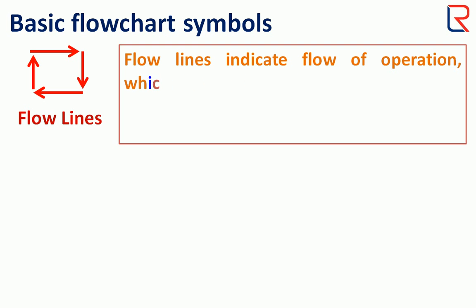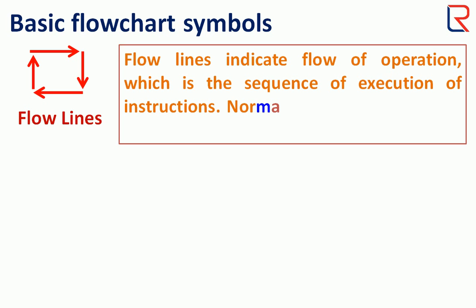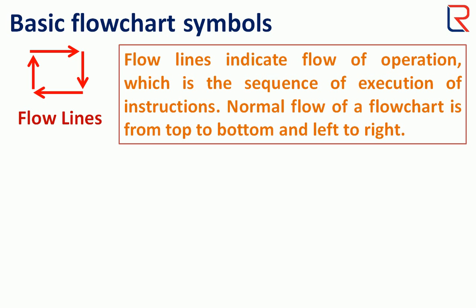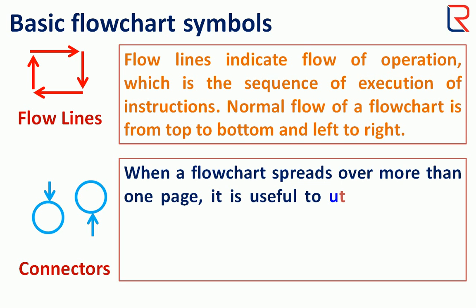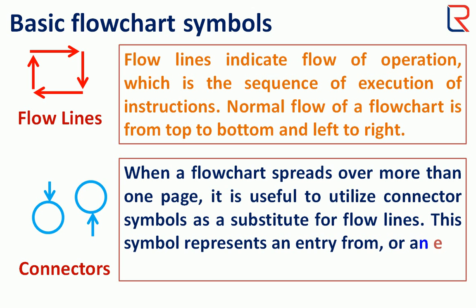Flow lines indicate flow of operation, which is the sequence of execution of instructions. Normal flow of flowchart is from top to bottom and left to right. When a flowchart spreads over more than one page, it is useful to utilize connector symbols as a substitute for flow lines. This symbol represents an entry from or an exit to another part of flowchart.